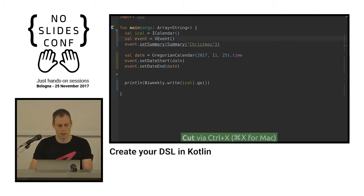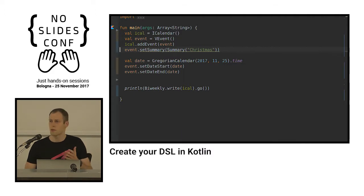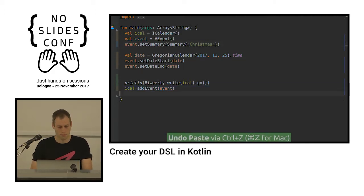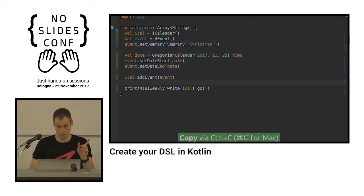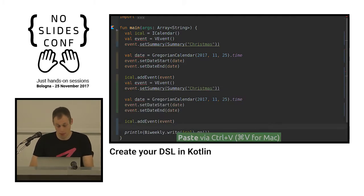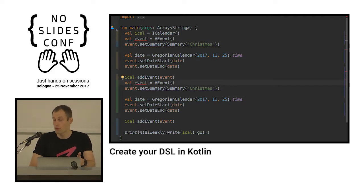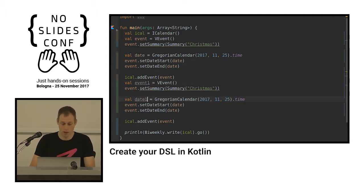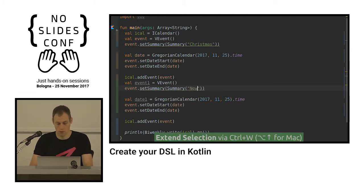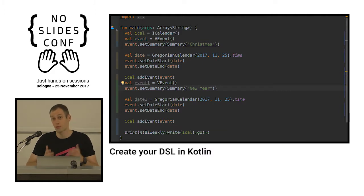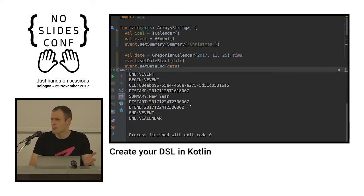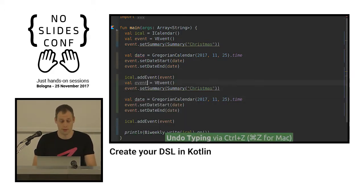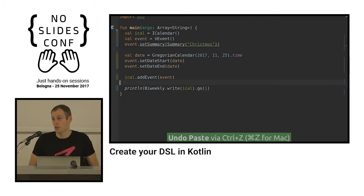If I put 'add event' right after I created the event, it depends on the internal implementation of the library — it may work and it may not. You don't know. And if you want to create another event, you copy-paste — you shouldn't do this, never, but sometimes you do. You get compile errors, fix them quickly, then change 'Christmas' to 'New Year' — it will compile and run, but the result will not be what you expect. You have two New Years on the wrong date — something crazy. So we can create an API that will prevent such kind of errors almost entirely.